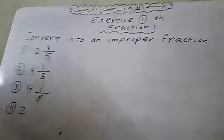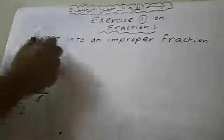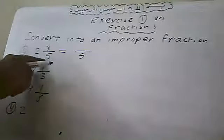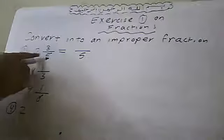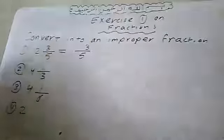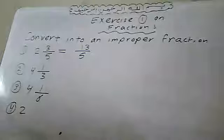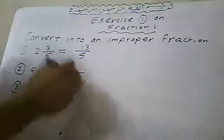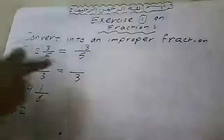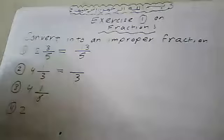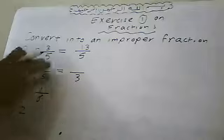Let me show you again. I'll write five below. Then: five times four equals twenty. Twenty plus one equals twenty-one. So the answer is twenty-one over five. I'll erase these so you can solve them again yourself.